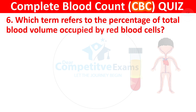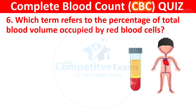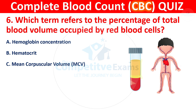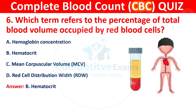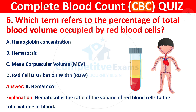Question 6: Which term refers to the percentage of total blood volume occupied by red blood cells? Your options are hemoglobin concentration, hematocrit, mean corpuscular volume, or red cell distribution width. The correct answer is B, hematocrit. Hematocrit is the ratio of the volume of red blood cells to the total volume of blood.